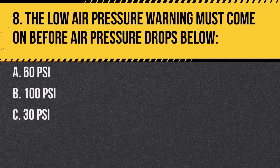Question 8. The low air pressure warning must come on before air pressure drops below: A. 60 psi. B. One hundred psi. C. Thirty psi. Answer A. 60 psi. It's a safety feature to alert the driver of low air pressure.